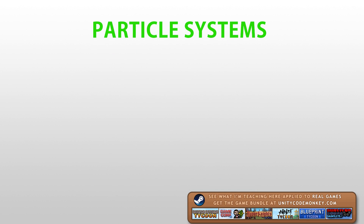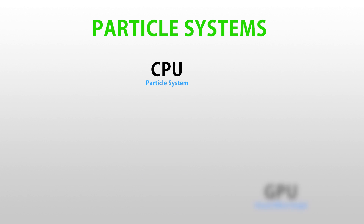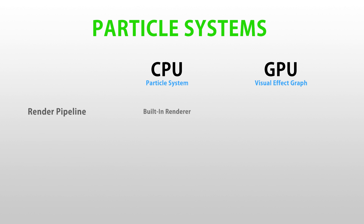As you might know, Unity has already had a built-in particle system for a very long time. The main difference between the built-in and the visual effects graph is how one runs on the CPU and the other one runs on the GPU. That means that the visual effects graph does not replace the built-in system, but rather they will continue to coexist side by side because each has their pros and cons. In terms of the renderer, the built-in runs on the built-in renderer, whereas the visual effects graph runs on the universal or the high-definition render pipelines.